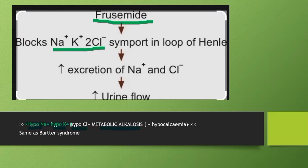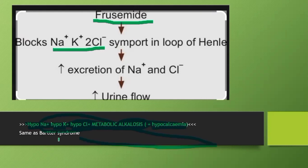They may give you a question like: a child has come to you with hyponatremia, hypokalemia, hypochloraemia, and metabolic alkalosis — with or without a history of diuretic use. You have to think of furosemide, because excessive use leads to this picture. Along with that, there will be hypocalcaemia, which shows the biochemical picture of Bartter syndrome. Bartter syndrome can be congenital or caused by prolonged use of furosemide.